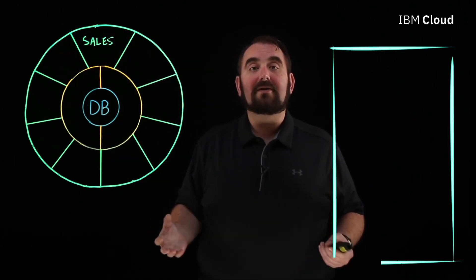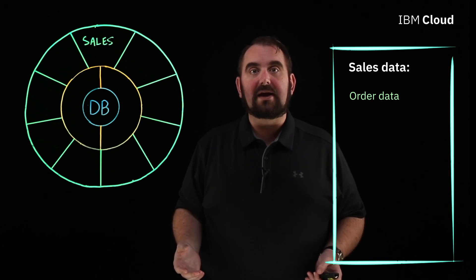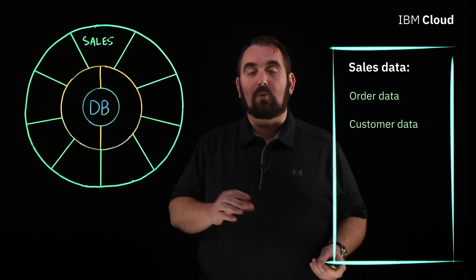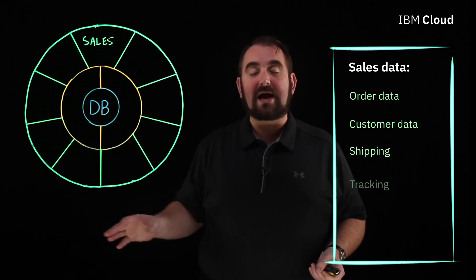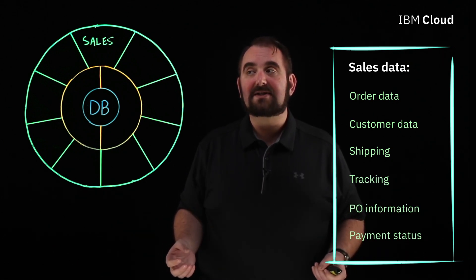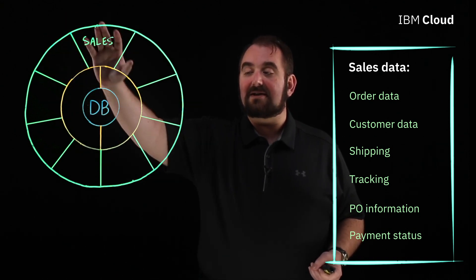For all that data to flow correctly into the database and for the core functions of the ERP system to work correctly, let's talk about the most commonly implemented modules. The first module is your sales module — that is all of your sales data, your order data, your customer data. What customer is buying what things, where it's going, shipping, tracking, all of the PO information on how it's getting paid for and the payment status. You've got to track all of that sales data.